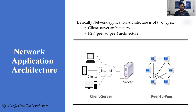Hello everyone, welcome to the course of Data Communication and Networks. In today's class we are going to learn about network application architecture. A network application architecture is of two types: one is client-server architecture and the second one is peer-to-peer architecture, which we can also call P2P architecture.